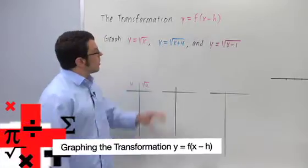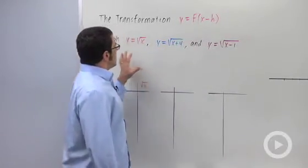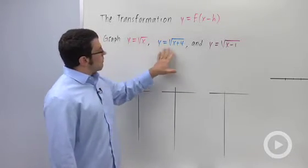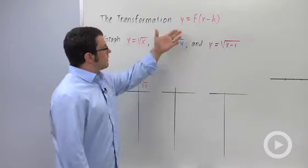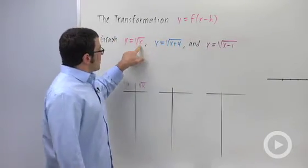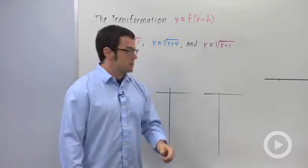I want to talk about the transformation y equals f of x minus h. And to understand what kind of transformation this gives us, let's look at an example where I graph three functions that are all related by this transformation. Notice in these two functions, I've replaced the x in root x by something else. Here x plus 4, here x minus 1.